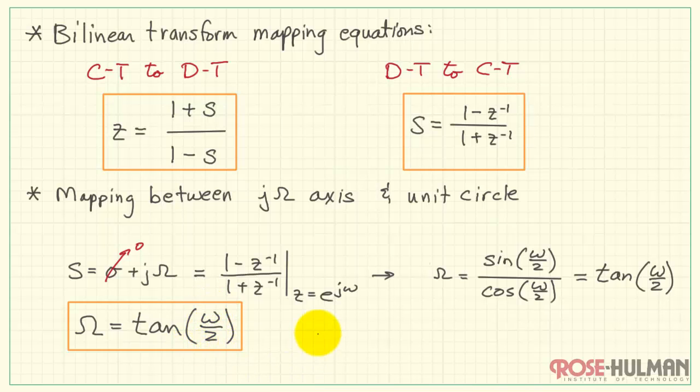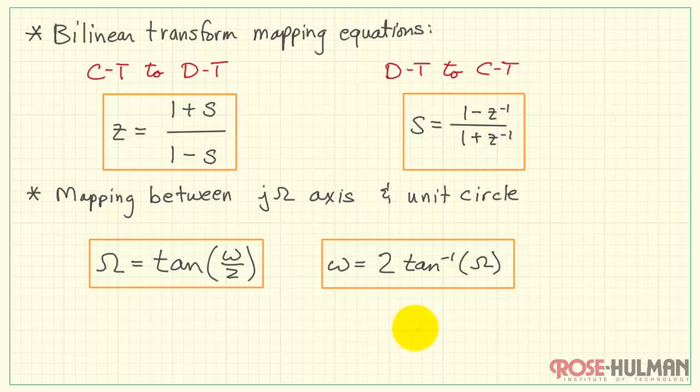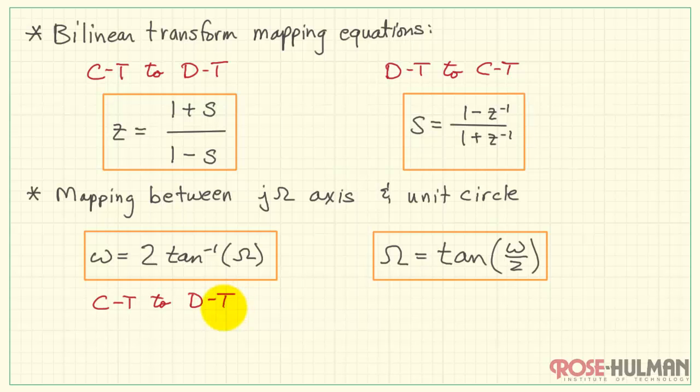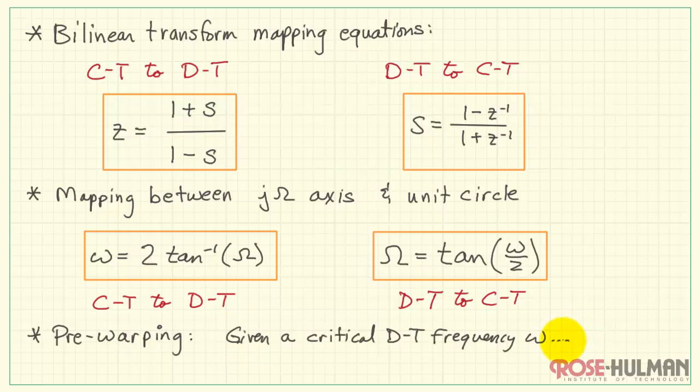If I were to solve for little omega, that would look like 2 times the inverse tangent of capital omega. Let me switch these around so they match the previous order. We have the continuous time to discrete time warping equation and then the discrete time to continuous time version of the equation. Now pre-warping means in terms of filter design that given a specific critical frequency in discrete time, for example a filter's cutoff frequency, we apply this equation to pre-warp to get the equivalent continuous time frequency capital omega.